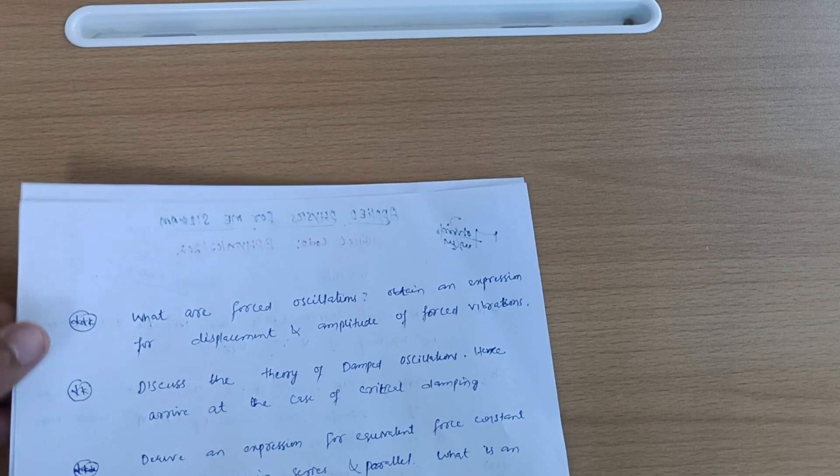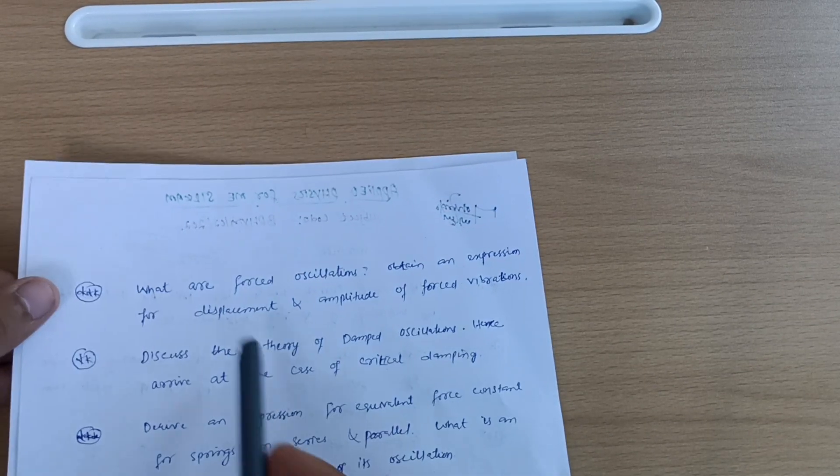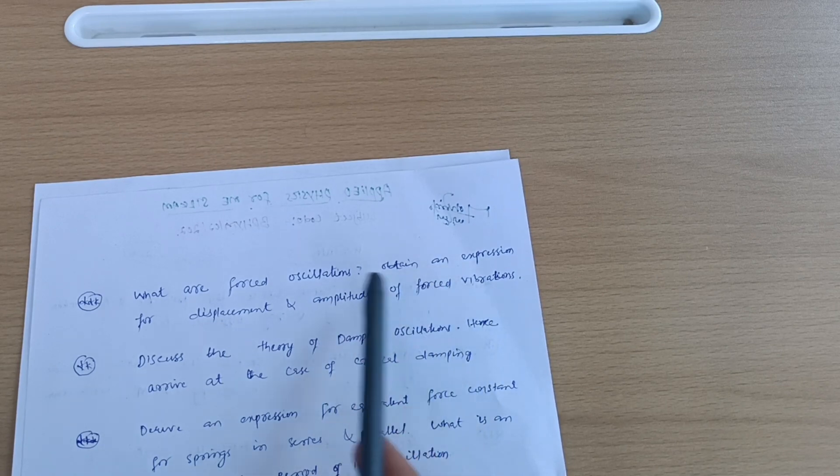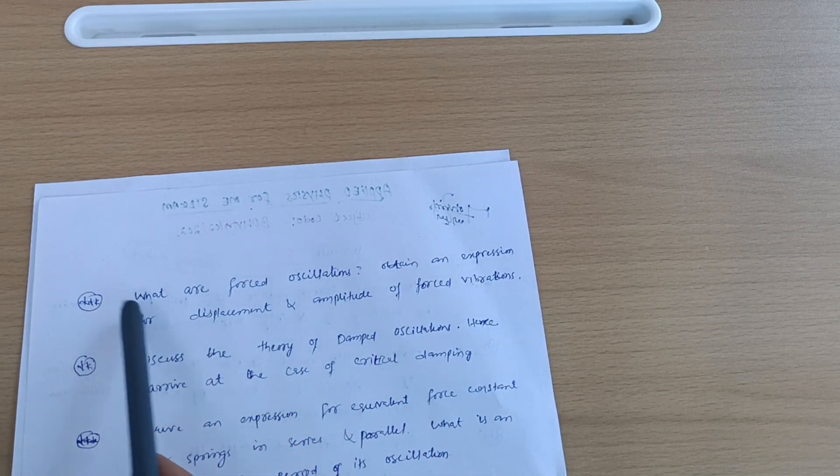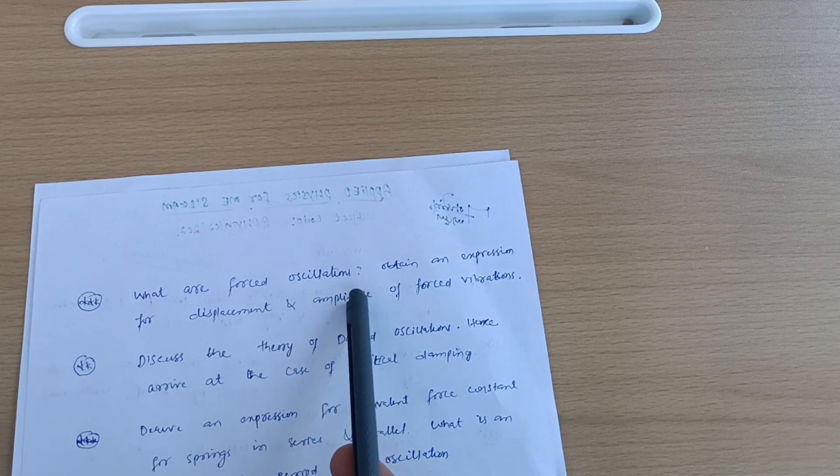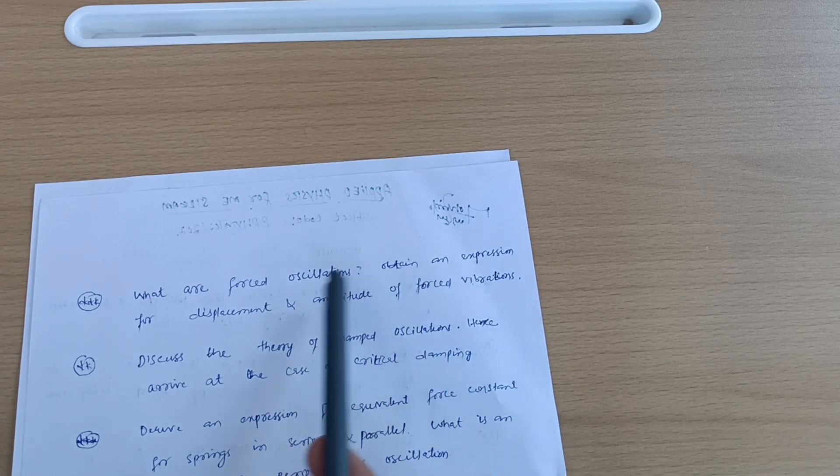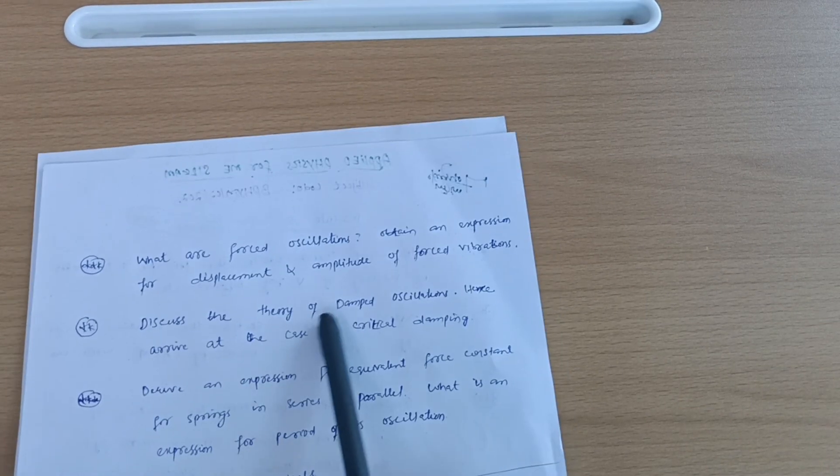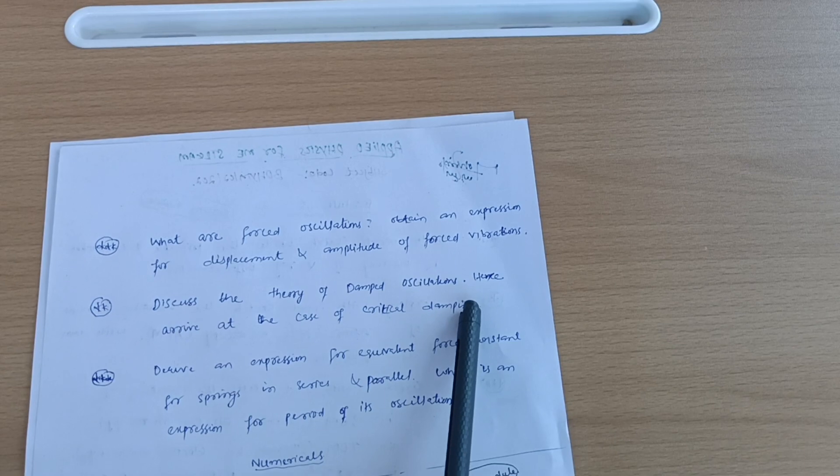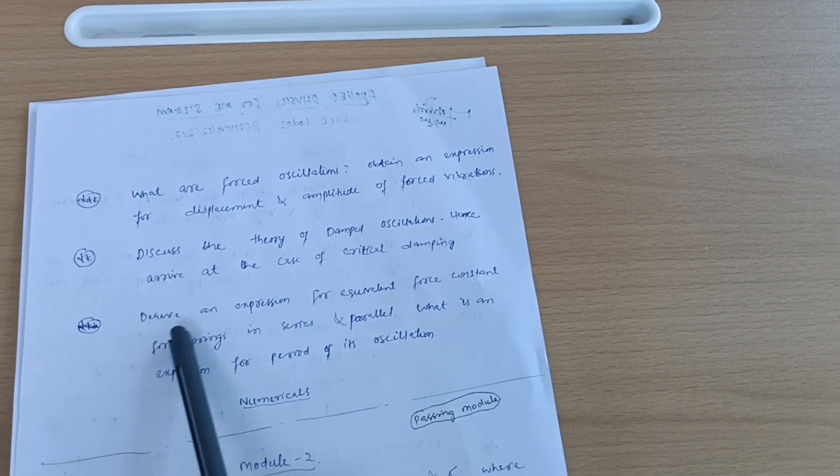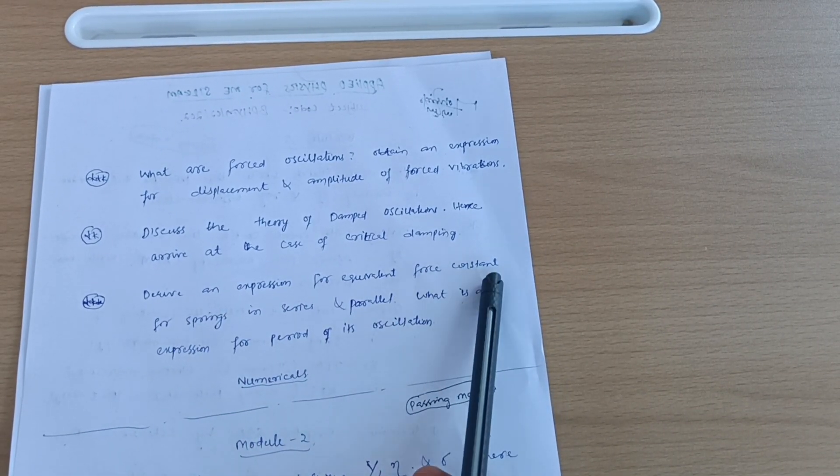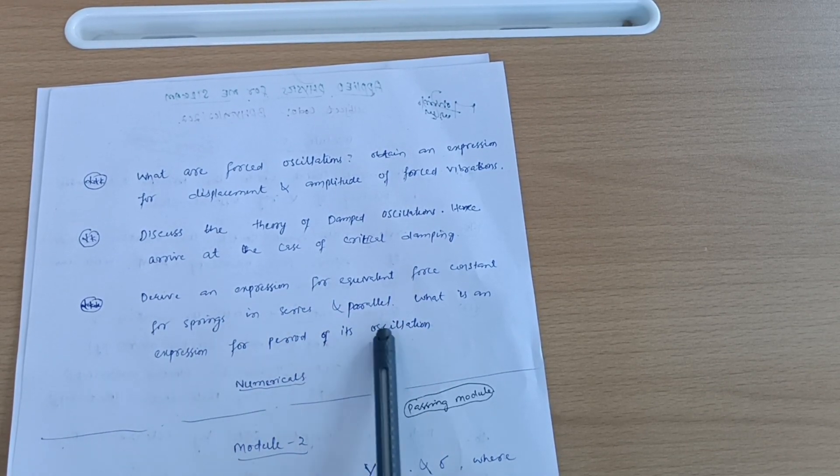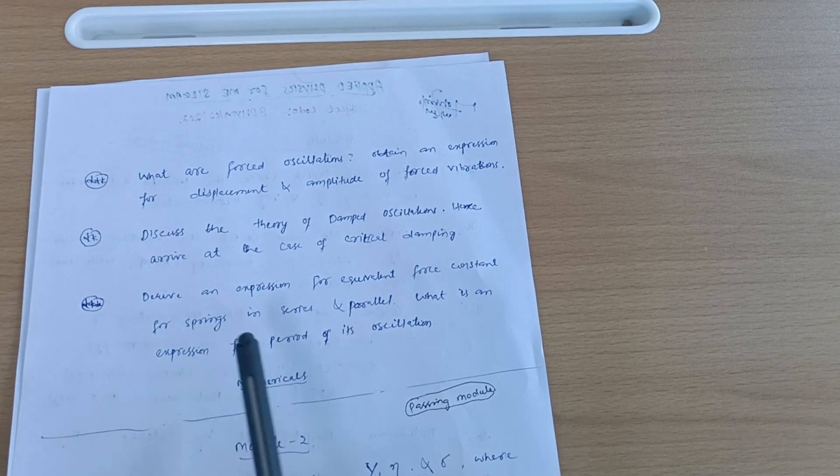Another question from Module 1: what are forced oscillations? Obtain an expression for displacement and amplitude of forced vibration. I have made separate video for this derivation also - if you are feeling it difficult, I can provide the link in the description box. Next is discuss the theory of damped oscillations, hence arrive at the case of critical damping. Last but not least, derive expression for equivalent force constant for springs in series and parallel. What is an expression for the period of its oscillation? This is again a super important question.